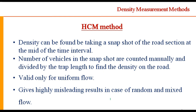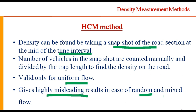The third method is as suggested in the Highway Capacity Manual of the US. The manual says that density can be found by taking a snapshot of the road at the midpoint of the time interval. So if you are taking a five-minute traffic volume count and speed data, take a snapshot at 2.5 minutes and count the number of vehicles in the snapshot — that is the density. This is naturally valid for uniform flow and gives highly misleading results in the case of random or mixed traffic flow.